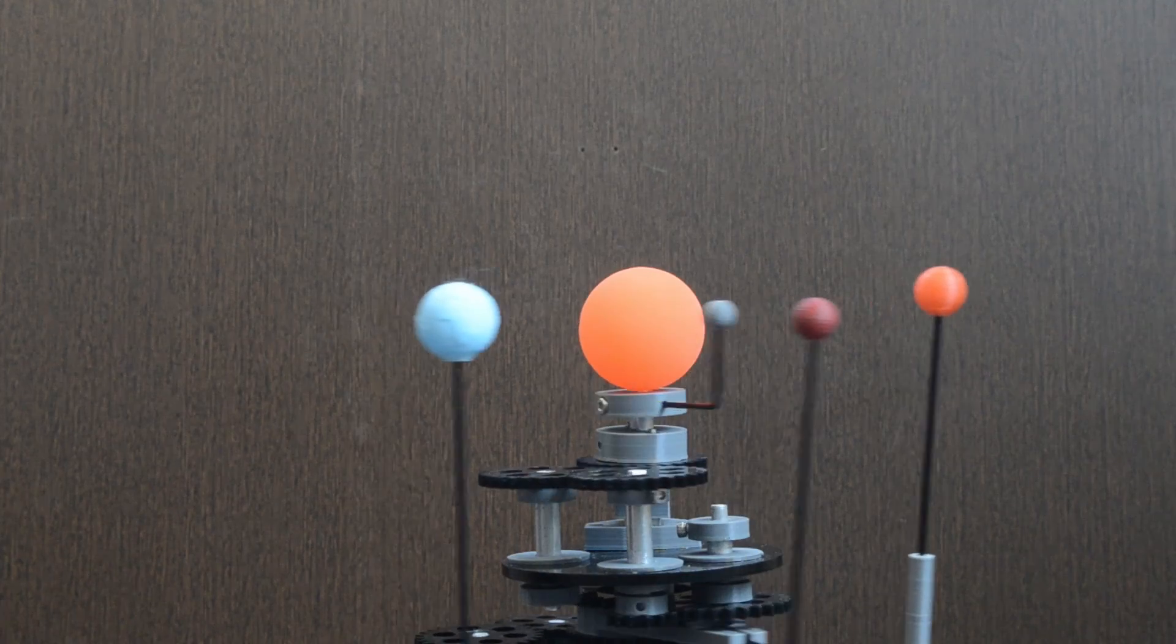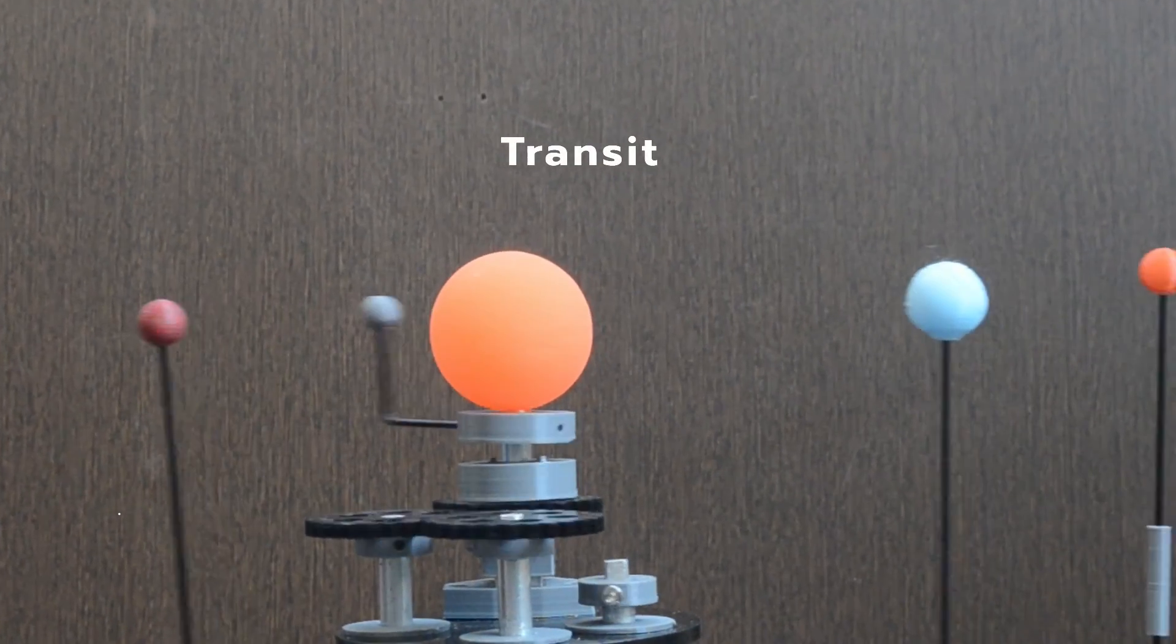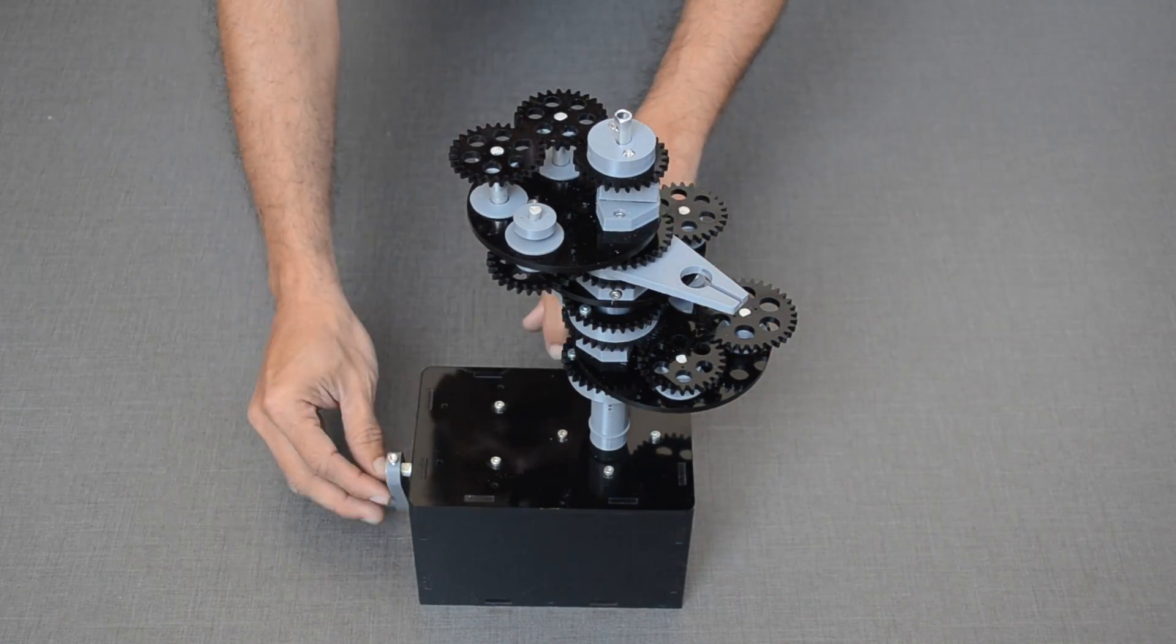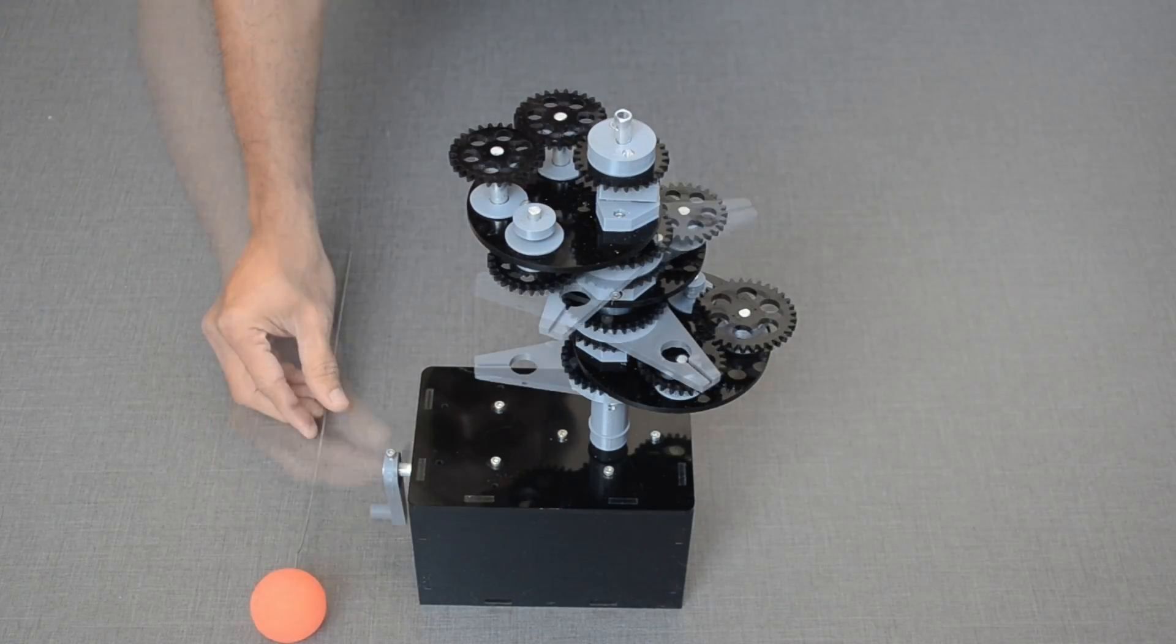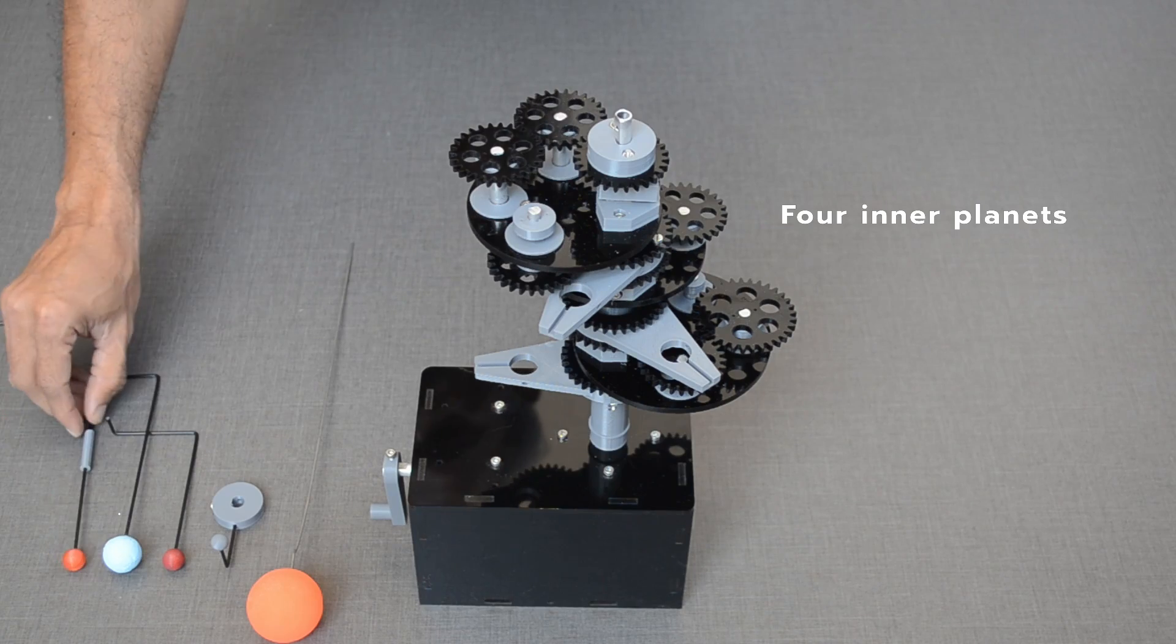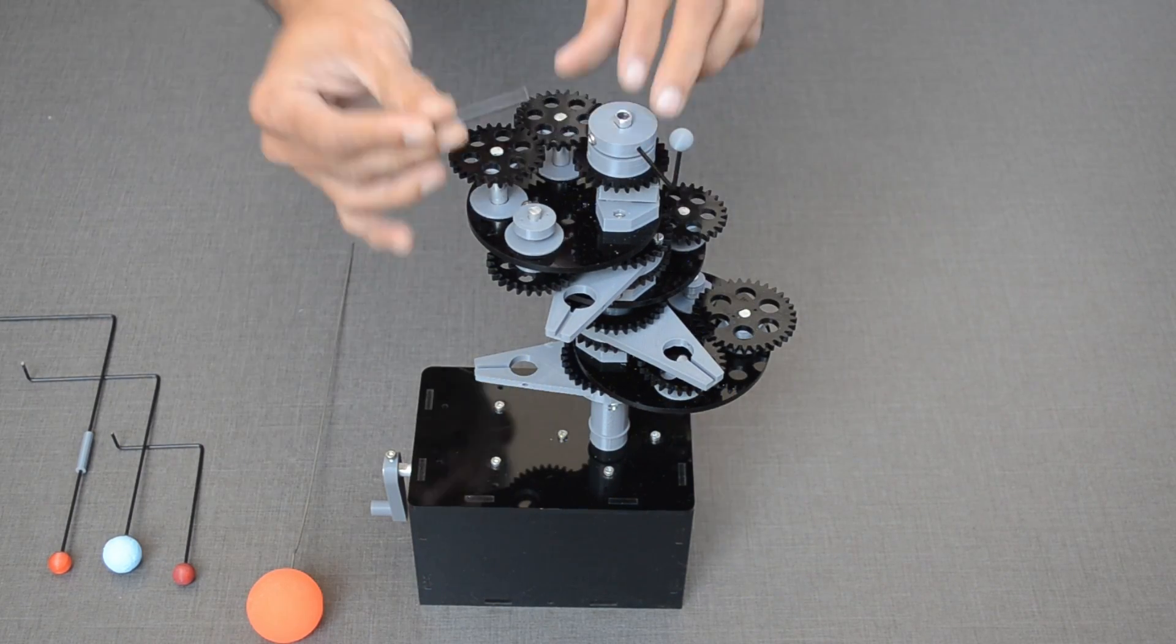Let us understand the important astronomical event transit with the help of a model. This is a desktop version about four planets of our solar system. It simulates the relative speed of the planets.